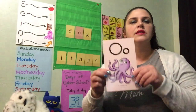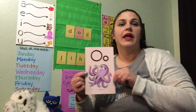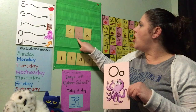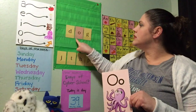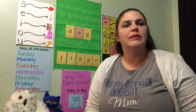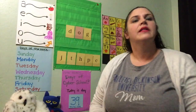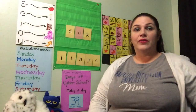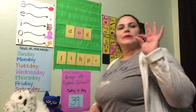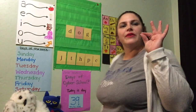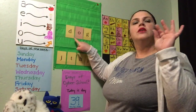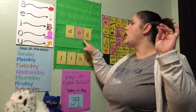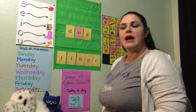We're going to focus on the short O "ah" sound today. D-ah-g. We see that O sound there in the middle of that word. Let's get our elbows up, thumb and pointer finger together, and start tapping. D, ah, g — dog. One more time: D, ah, g — dog. Nice job.